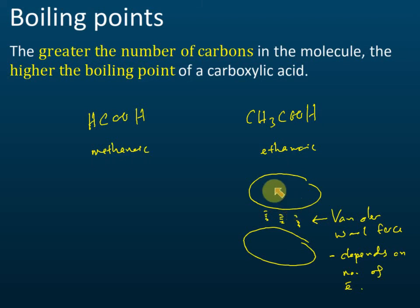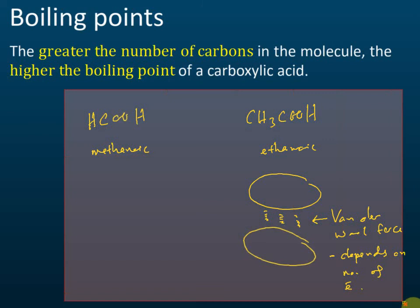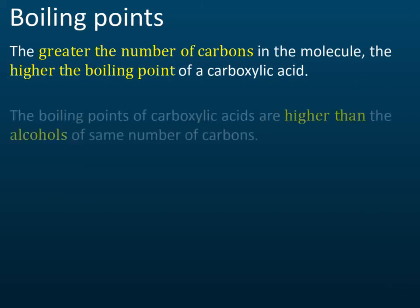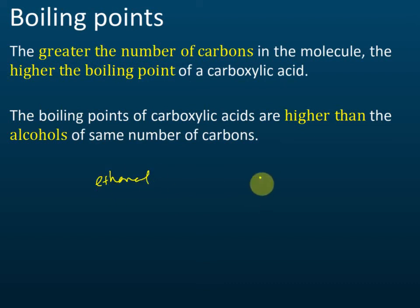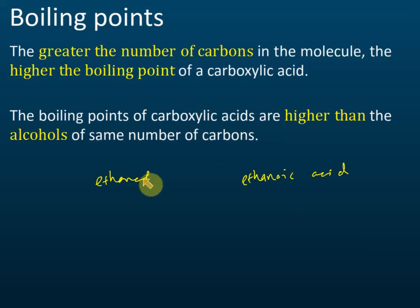So that's the first thing you need to know: the greater the number of carbons, the higher the boiling point. Second, the boiling points of carboxylic acids are higher than alcohols of the same number of carbons. For example, ethanol compared to ethanoic acid — ethanoic acid has a higher boiling point. You don't actually need to explain this, but let me show you anyway.